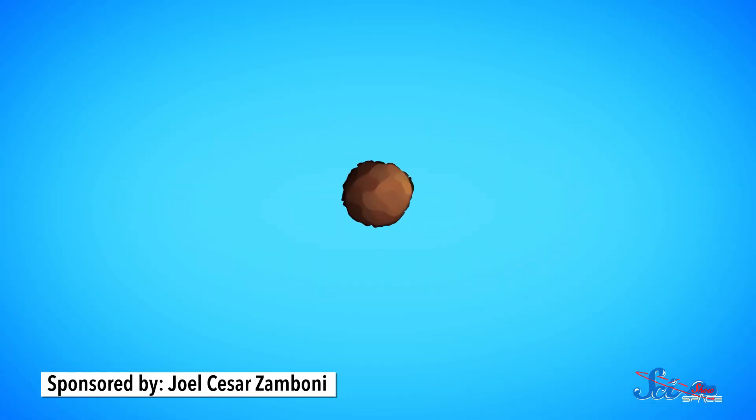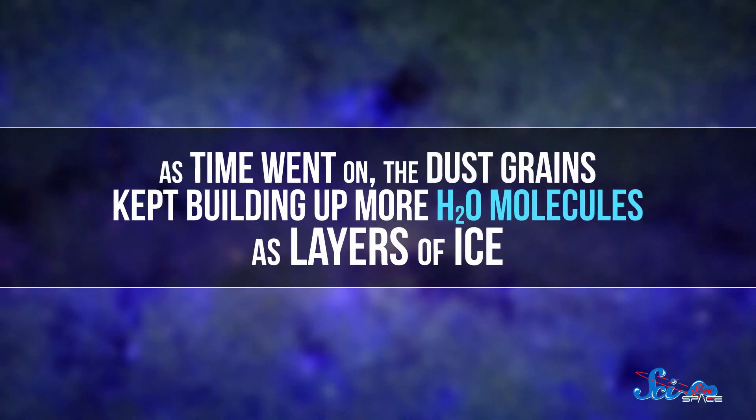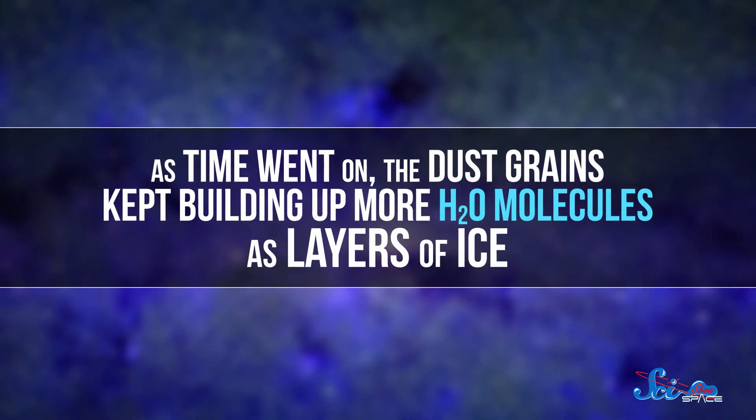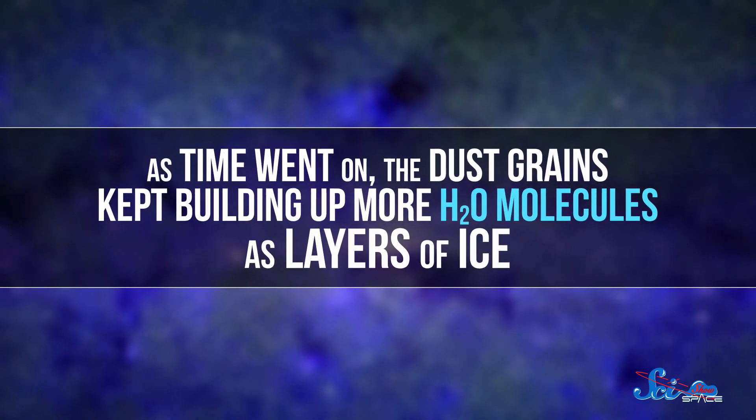A couple billion years after that, these atoms were all swirling around with a bunch of dust grains made of carbon and silicon and other things. Every once in a while, hydrogen and oxygen atoms would both be on the grain long enough to form chemical bonds. And as time went on, the dust grains kept building up more H2O molecules as layers of ice. Soon, the universe had lots of water — icy, dusty, spread-out water.